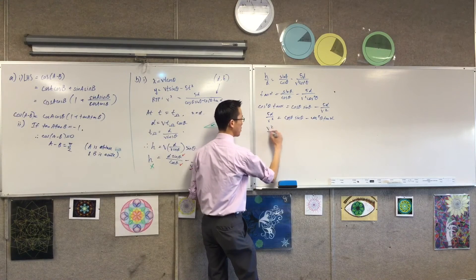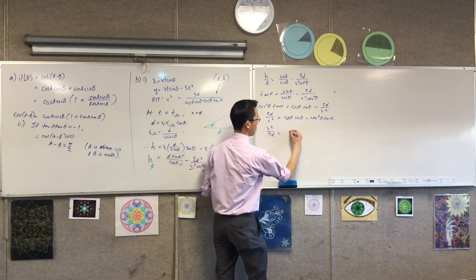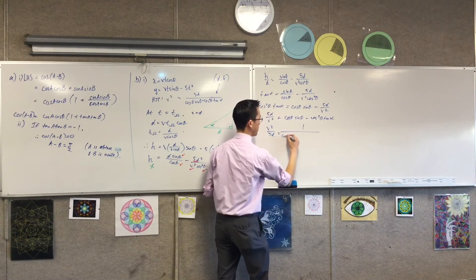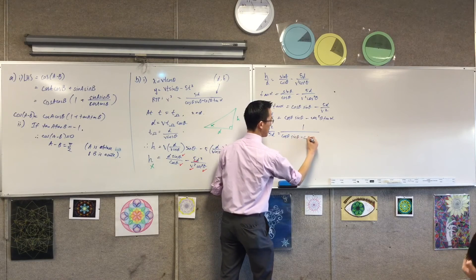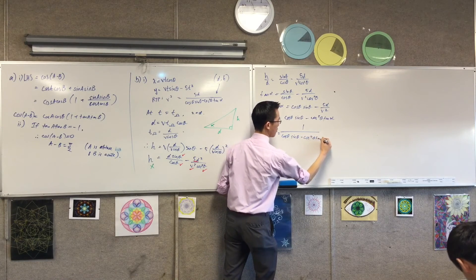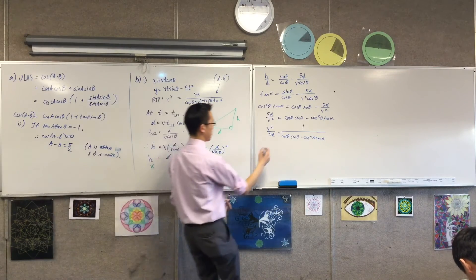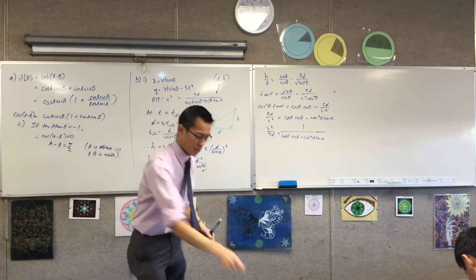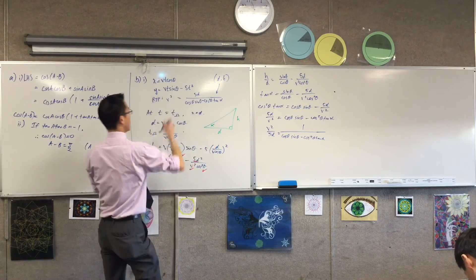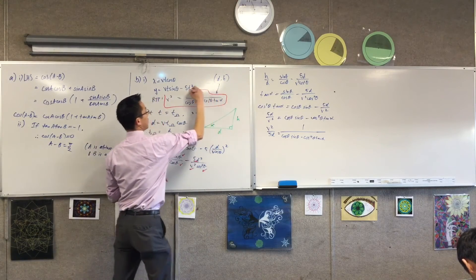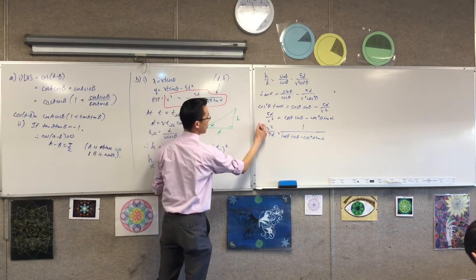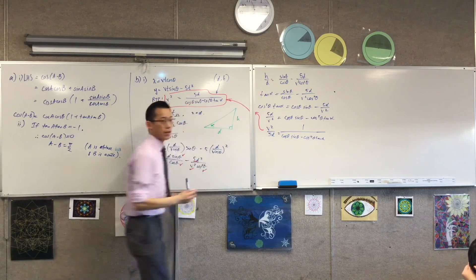I'll just take reciprocals. And the last thing I need to do is multiply through. Does that make sense? So I'm going to get my... I'm not even going to write it down. There's the result. I've already got it up here.